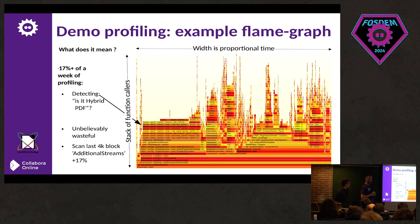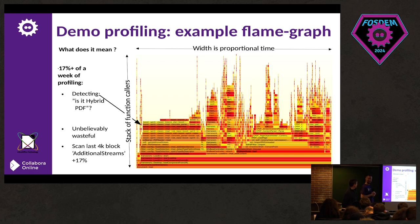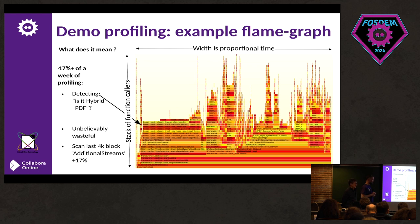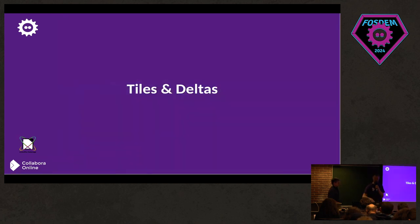In flame graphs the colors don't matter — what matters is the width of the bar. The wider the bar, the more proportionally time has been spent there. You just want to find the widest line and make it narrower. In this particular one, a gigantic pile of Boost Spirit Classic is being used to detect whether a PDF being opened is a hybrid PDF — the LibreOffice format that embeds the original document inside the PDF. It takes a ludicrous amount of time over a week, when it could be done in many orders of magnitude less. You should never optimize before profiling.